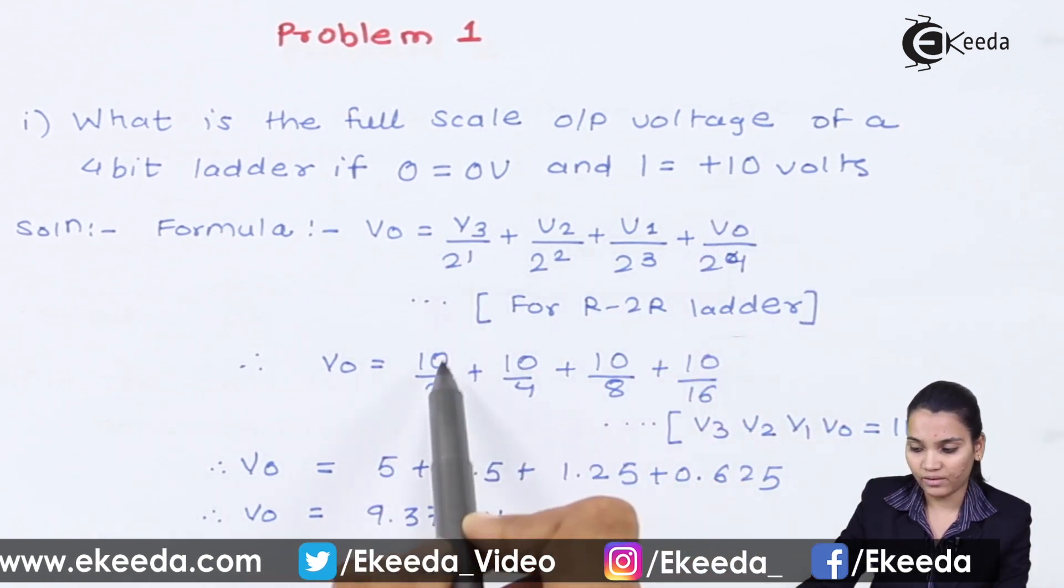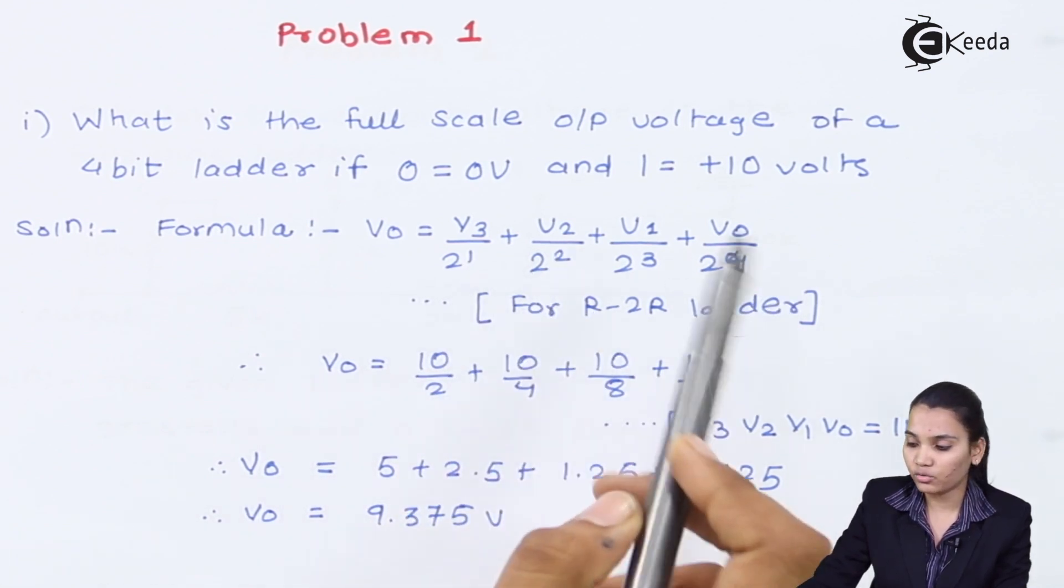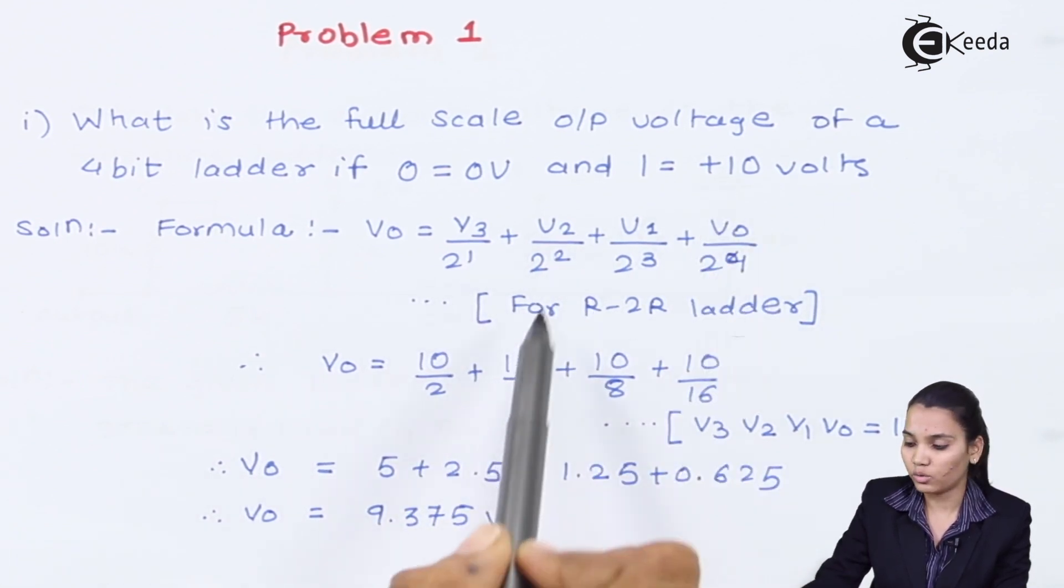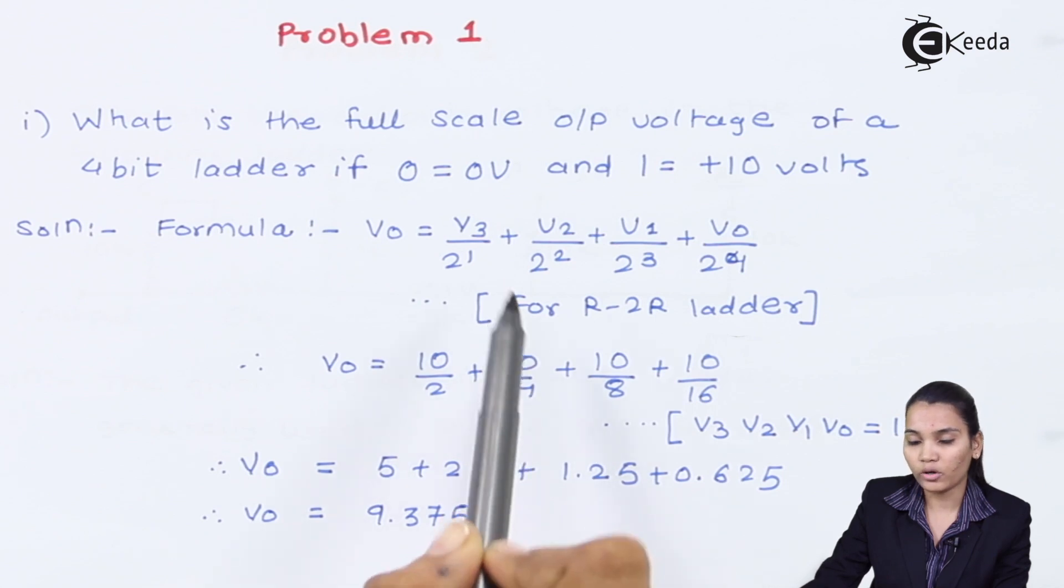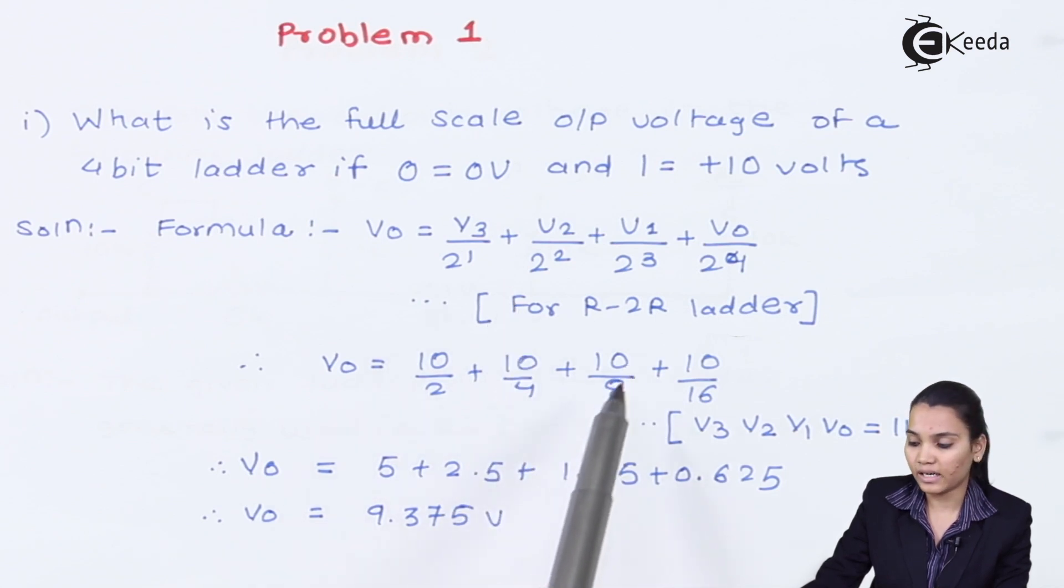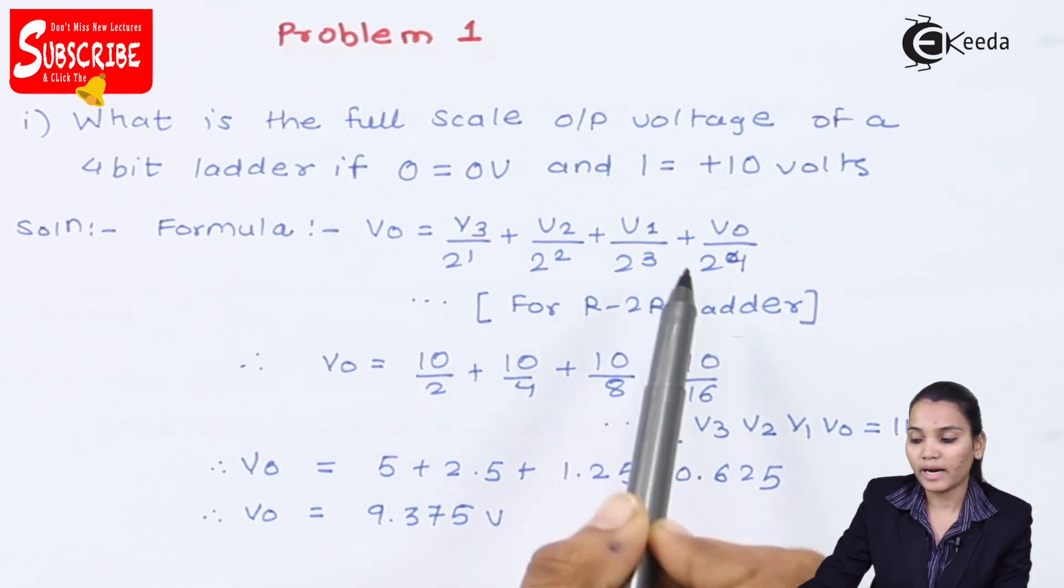Since 1 represents plus 10 voltage, V3 will be 10 volt and 2 raise to 1 will be 2. Then V2 will represent 10 volt. V2 = 10 volt/2^2 = 10/4, plus 10/8, and plus 10/16, that is 2^3 and 2^4.